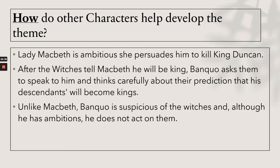Other characters help develop the theme of ambition: Lady Macbeth is ambitious and persuades Macbeth to kill King Duncan. After the witches tell Macbeth he will be king, Banquo asks them to speak to him and thinks carefully about their prediction that his descendants will become kings. Unlike Macbeth, Banquo is suspicious of the witches and, although he has ambitions, he does not act on them.